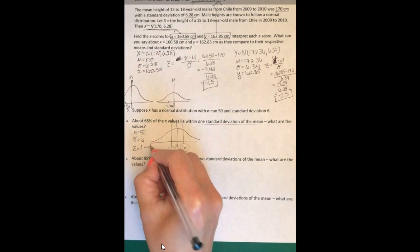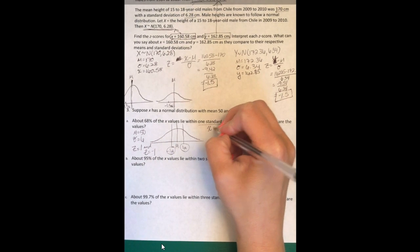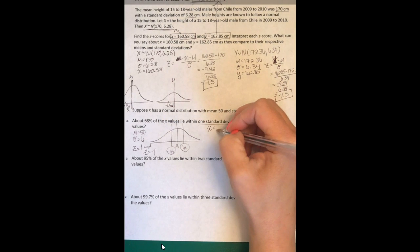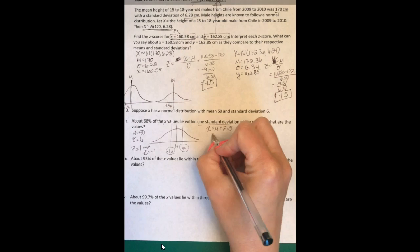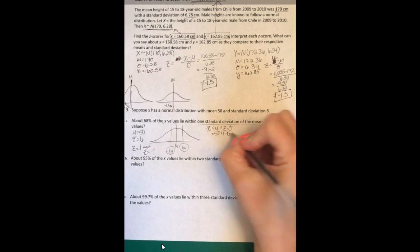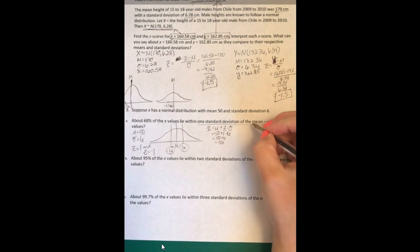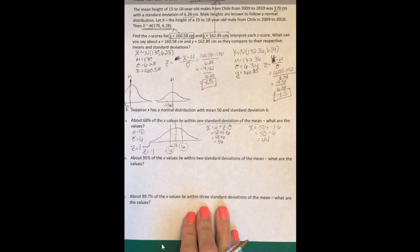We are going to do X equals, we're solving for X here, we're finding the X values. So remember X equals the mean plus Z times the standard deviation. So 50 plus the first one we'll do is 1 times 6, that's 56. Now let's do it with negative 1. It's going to be 50 minus 6, which is 44.